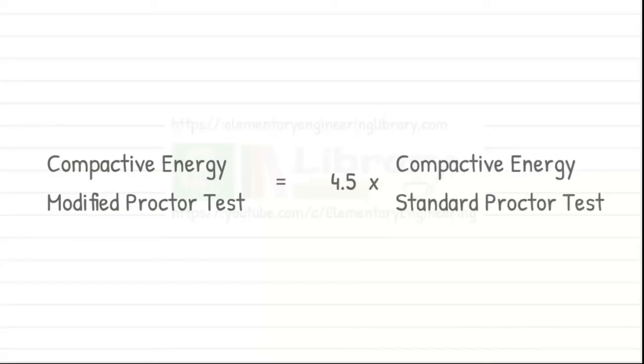The compactive energy imparted to the soil in the modified proctor test is about 4.5 times that in the standard proctor test. Thus, much heavier compaction is attained in the modified test.